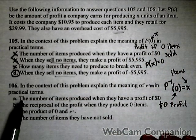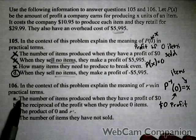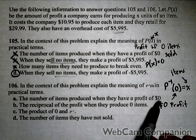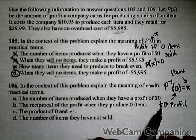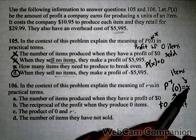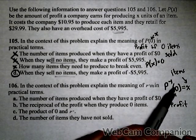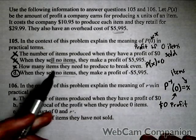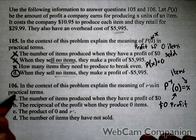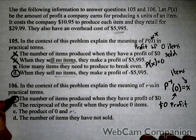Now let's see what matches the best. The number of items produced when they have a profit of $0. There we go, first one. If we calculated P inverse of 0, its output would be the number of items with a profit of $0, so it's going to be A.